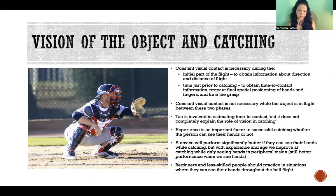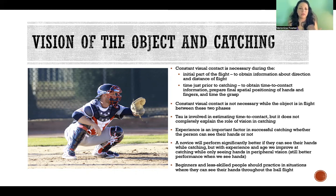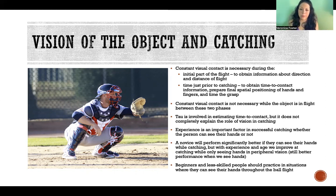The second important period of constant visual contact is the time just right before catching, when we're obtaining time-to-contact information — tau. We're seeing the change in size of the image on the retina as the object is coming toward us, which gives us information about time to contact. We need to obtain that visual information so that we can prepare our final spatial positioning of the hands and fingers and prepare for grasp.